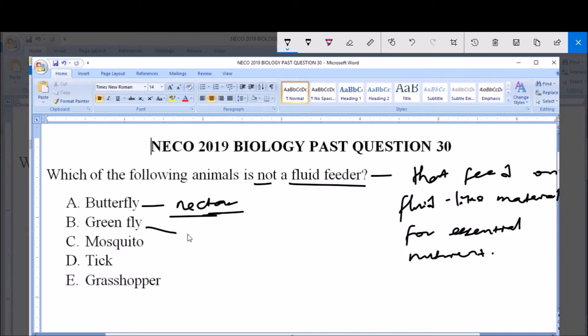Likewise, the greenfly also is a fluid feeder. The mosquito is also a fluid feeder because they feed on blood.